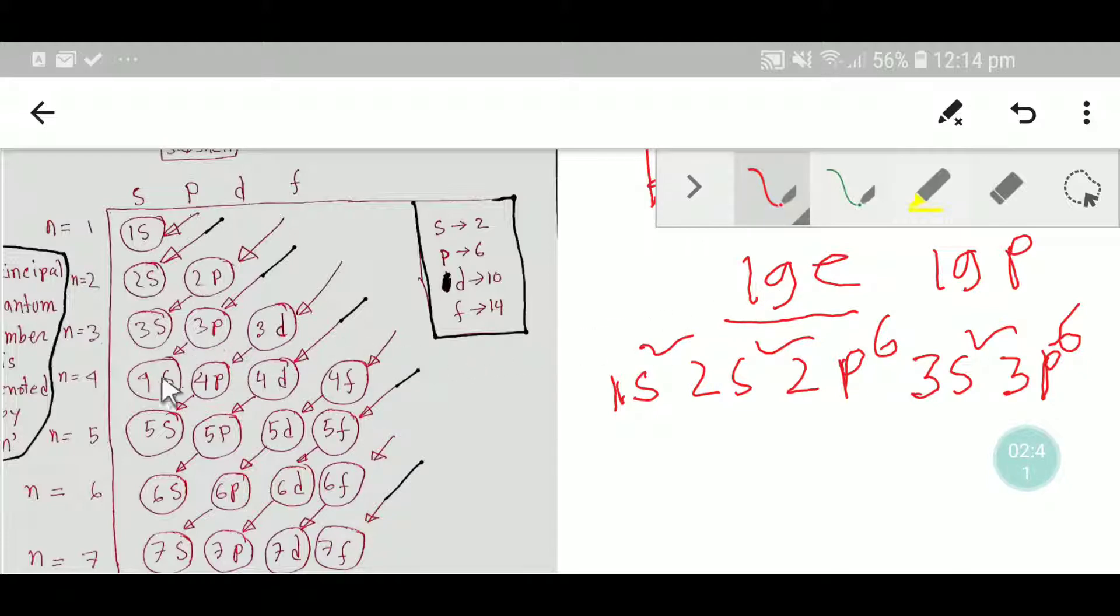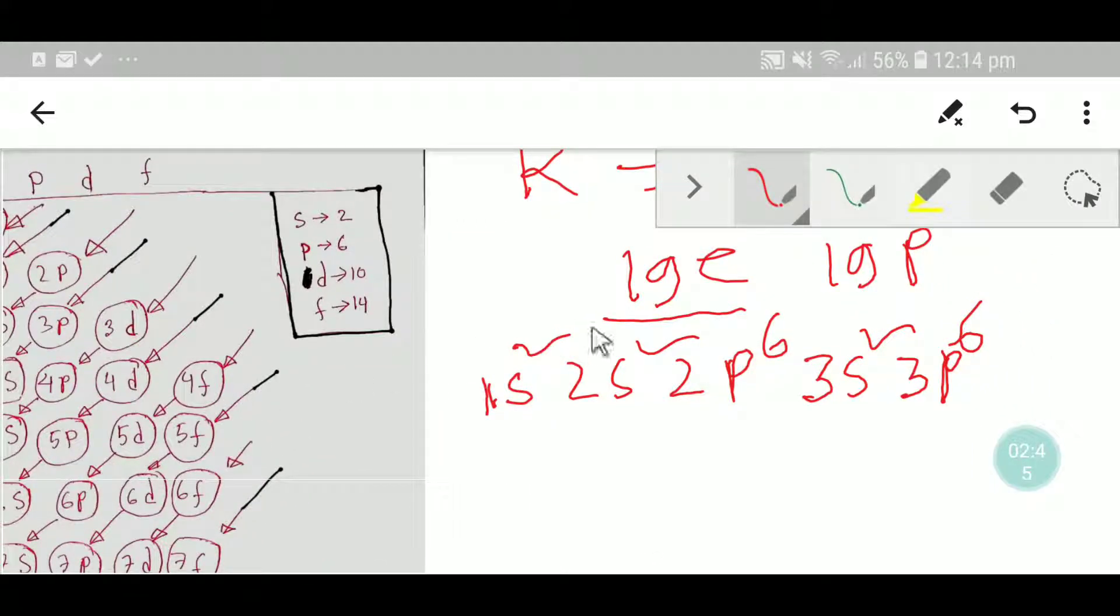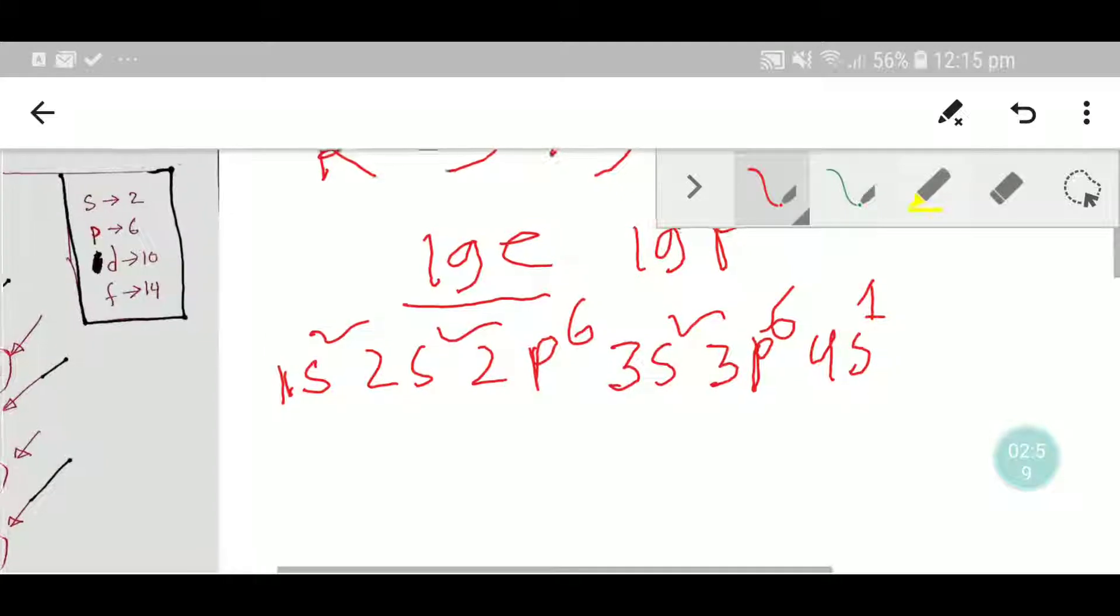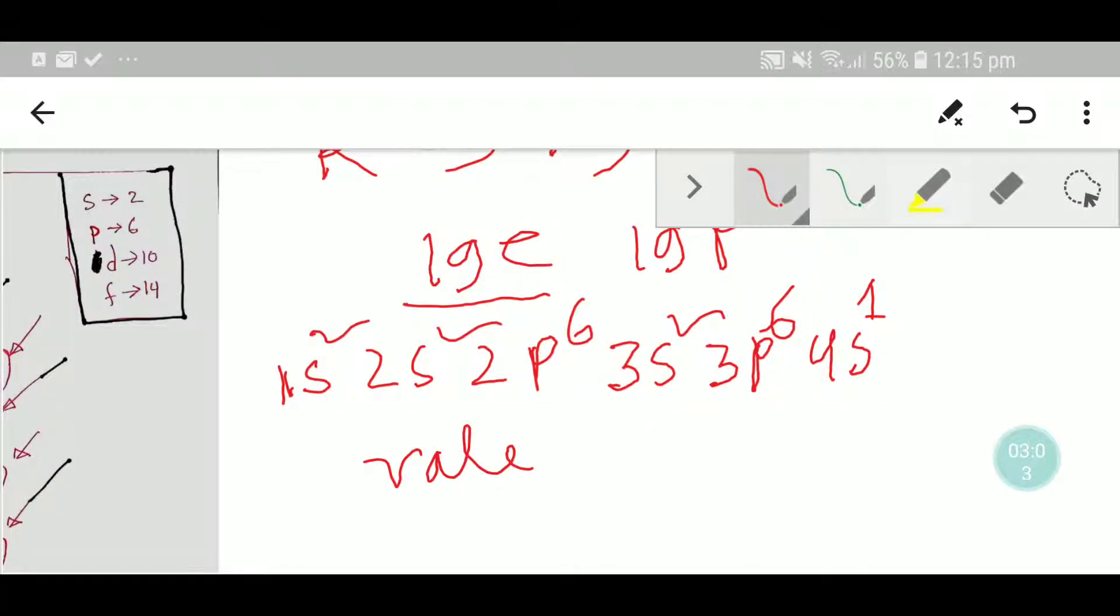After 3p we have to take 4s. So the last electron will go in 4s1. Now we have to find out the valency shell.